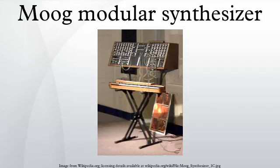The first Moog system was bought by choreographer Alwyn Nicolais. Lothar and the Han People began using the modular Moog in 1965. Composers Eric Siday and Chris Swansen were also among the first customers, with Paul Beaver and Mickey Dolenz using the Moog on the Monkees' fourth album, Pisces, Aquarius, Capricorn and Jones Ltd, released in November 1967.